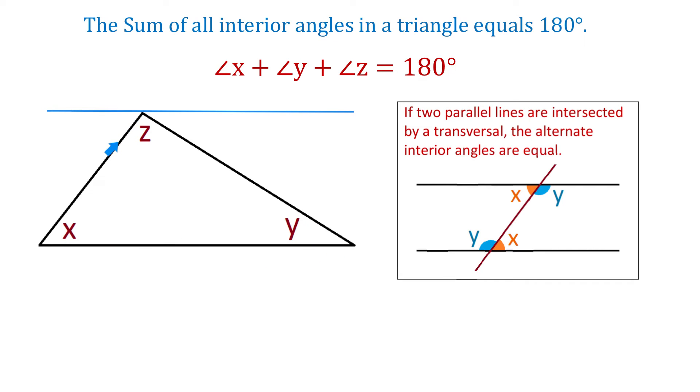and this side acts like a transversal, then the measure of this angle is the same as the measure of this angle. So, if this angle measures x degrees, then this one also measures x degrees.